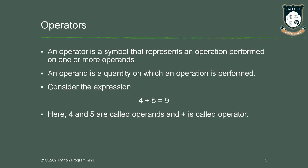An operator is nothing but a symbol which represents an operation performed on one or more operands. The operand means it is the digit or quantity over which the operation is performed. For example, in the expression 4 plus 5 which is equal to 9, the plus symbol is said to be the operator and the numbers 4 and 5 are said to be the operands.